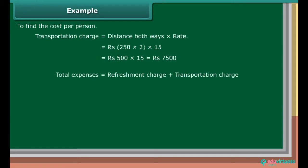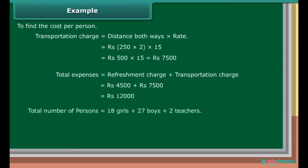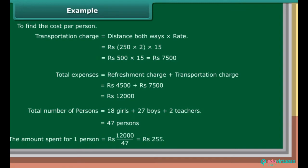Total expenses is equal to refreshment charge plus transportation charge, which is equal to Rs. 4,500 plus Rs. 7,500, which is equal to Rs. 12,000. Total number of persons is equal to 18 girls plus 27 boys plus 2 teachers, which is equal to 47 persons. The amount spent for one person is equal to Rs. 12,000 upon 47, which is equal to Rs. 255,000.